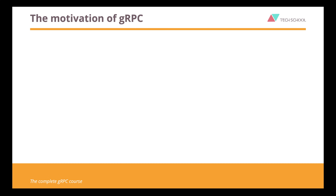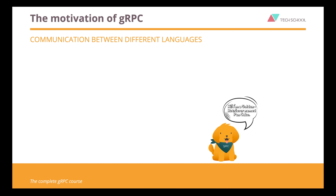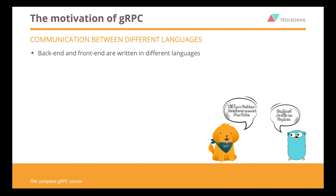The answer is communication. Applications are written using different programming languages. For example, the backend can be written in Go, while the frontend like the Android app is written in Java, and the iOS app is written in Swift. So how do they talk to each other?